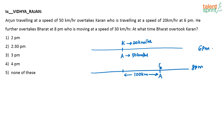At that point, Arjun is overtaking Bharat, who is travelling at a speed of 30 km per hour. The question is at what time did Bharat overtake Karan? Let us backtrace and see what could be the time where Bharat could have overtaken Karan. At 8 p.m., Karan is travelling at a speed of 20 km per hour, so in 2 hours Karan would have travelled only 40 km.